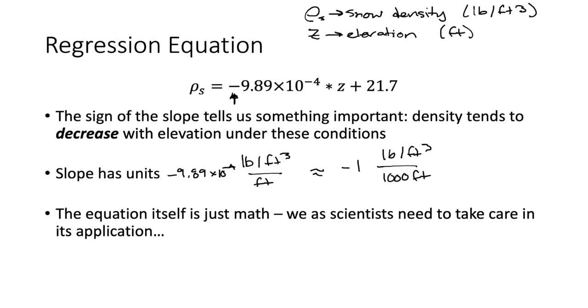So I want to do two calculations with this equation, just to point out that they're both very powerful, but they can also be applied inappropriately. So first off, we had sites at elevations that ranged between about 4,400 feet and about 9,500 feet. We don't have an observation at 10,000 feet, but that's only 500 feet above our highest snow tail site. So let's ask ourselves, what is the snow density at a location that is at 10,000 feet in elevation? And we just used the equation here.